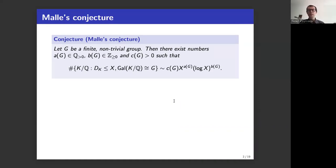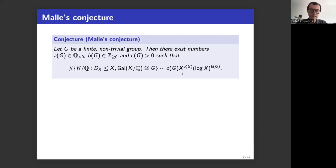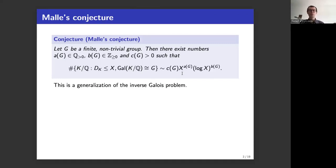The conjecture is that this count should be asymptotic to some leading constant C_G, times X to some power, times log X to some other power. This is, of course, a generalization of the inverse Galois problem.